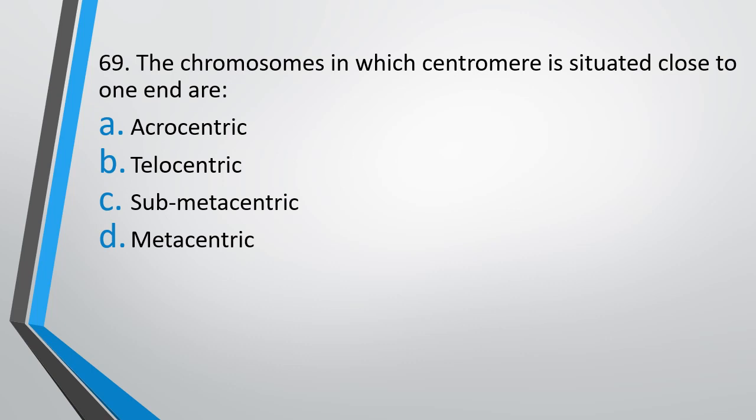Question number 69: The chromosomes in which the centromere is situated close to one end are — acrocentric, telocentric, submetacentric, or metacentric. The correct answer is option A — acrocentric chromosome.